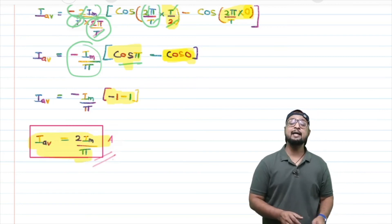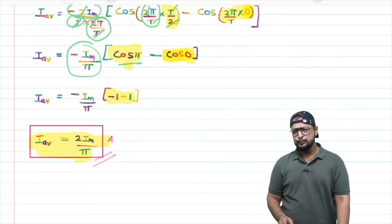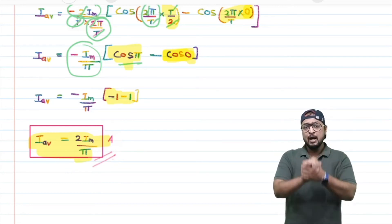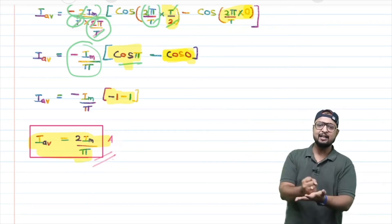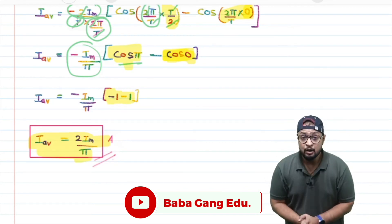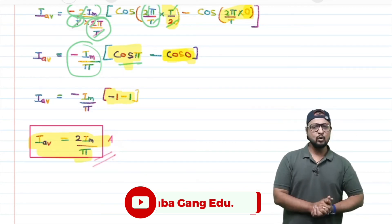The answer came out to 2I_m/π. Very beautifully, very easily, I just used the sum upon interval formula, put in the value of I from 0 to T/2, integrated, and finished the derivation. 2I_m/π or 2I₀/π...